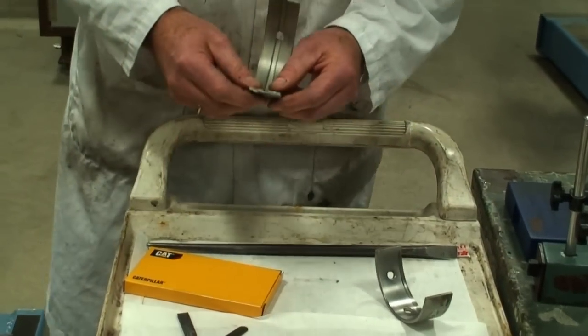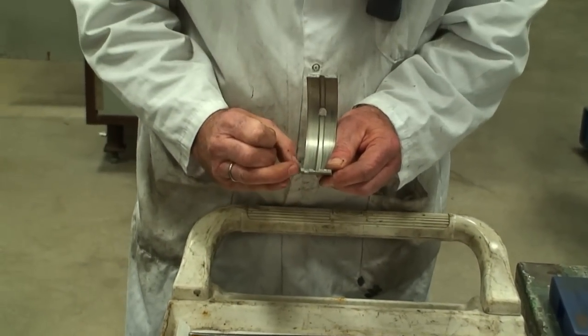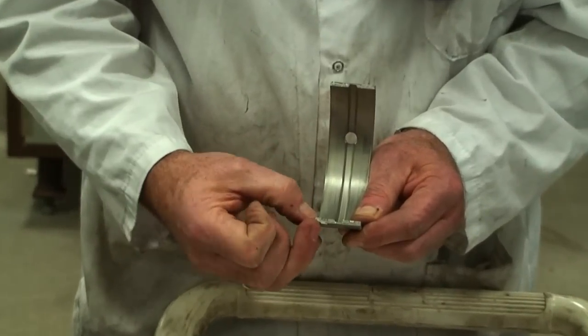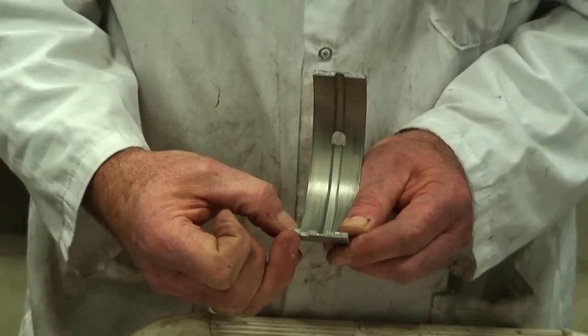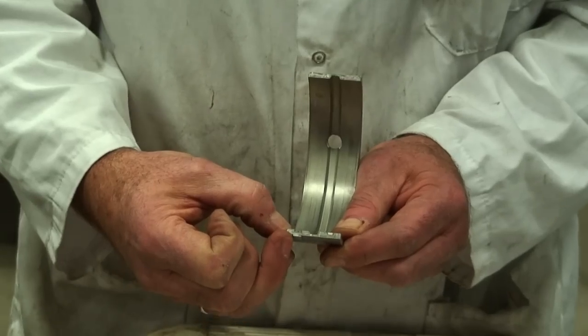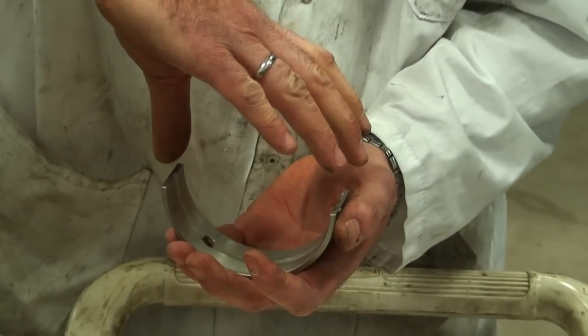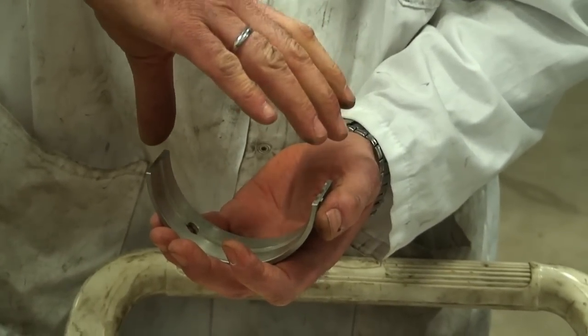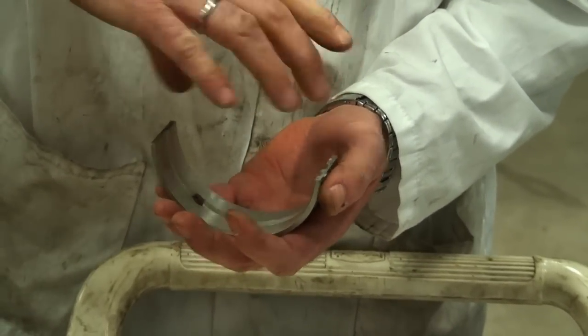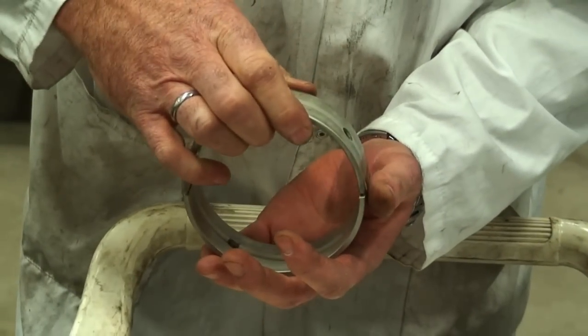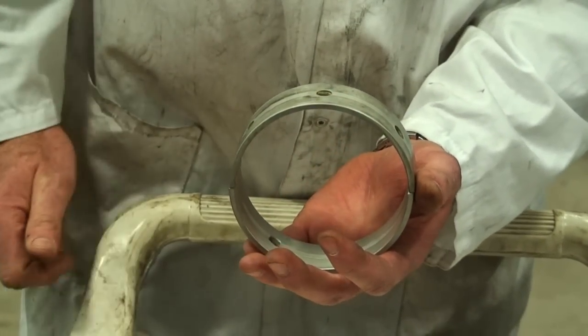One other thing that we take a look at on these bearings is the tang. And in previous videos, I've indicated that the tang is only for the purpose of installation of the bearing. It does not hold it there. What holds it there is the crush. And when it's crushed into position with the cap torqued on, either the main cap or the connecting rod cap, then it holds radial pressure all the way around on both bearings to keep it in its respective position.